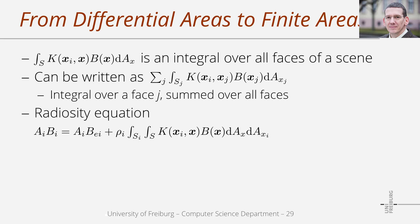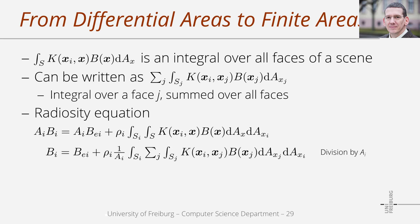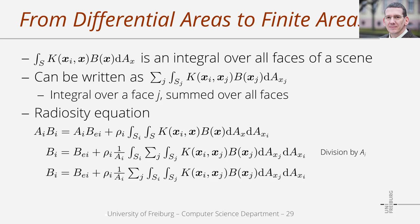This relation is used to rewrite the form of the radiosity equation. We start with the respective form, replace the integral over the entire surface with the sum of integrals over individual patches j, and divide the equation by the area of patch i. Finally, we change the order of the sum and the integral, resulting in two integrals over patches i and j, summed over all patches.